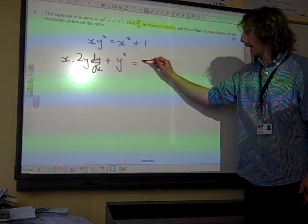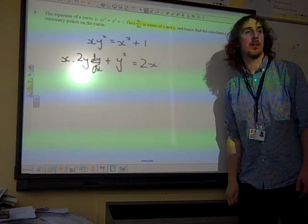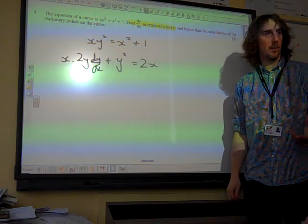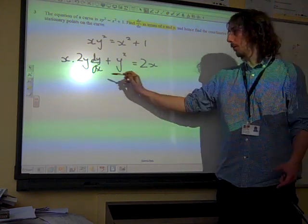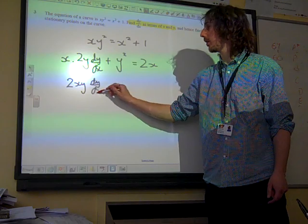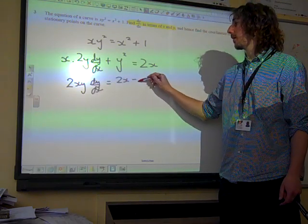Differentiate the right hand side and we get 2x, and of course the 1 goes to 0. What we now need to do is to rearrange this to find out what dy by dx is equal to.